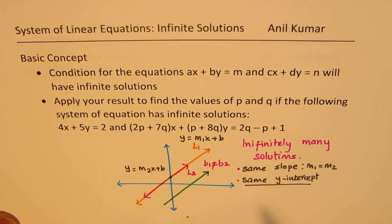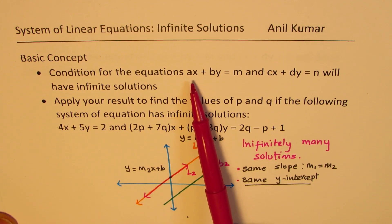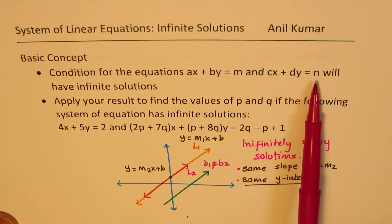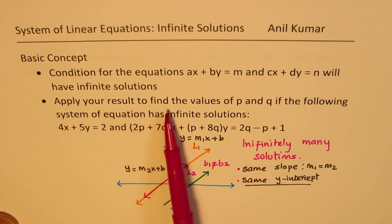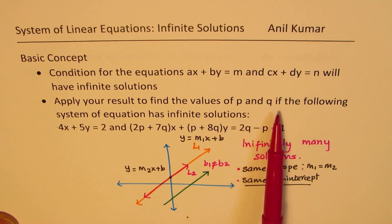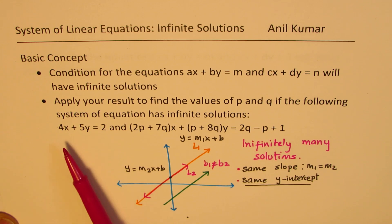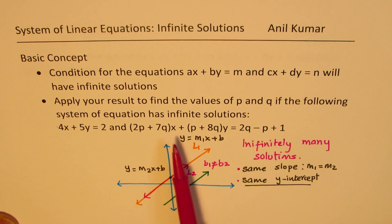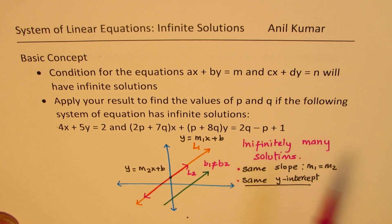So we will actually see what it means when we write two equations of the form ax + by = m and cx + dy = n. Once we understand the condition, then we will solve this test question, which says: apply your result to find the value of p and q if the following system of equations has infinitely many solutions — 4x + 5y = 2 and (2p + 7q)x + (p + 8q)y = 2q − p + 1.